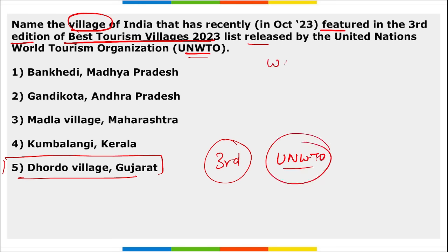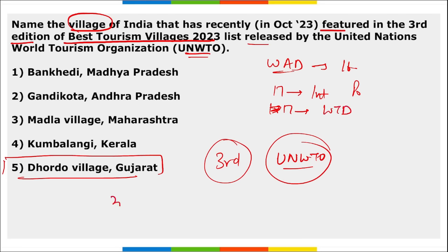World Anaesthesia Day is observed on 16th October. International Day for the Eradication of Poverty and World Trauma Day are on 17th October. World Statistics Day and International Chefs Day are observed on 20th October.